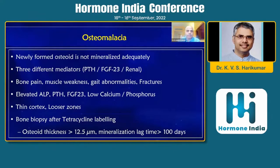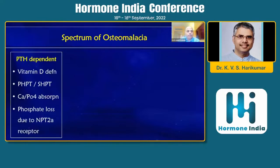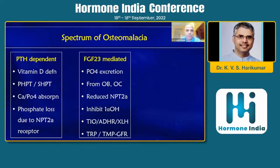Depending on availability, X-rays will show thin cortex and Looser zones. The definitive diagnosis may come after tetracycline labeling, depending on the osteoid thickness and mineralization lag time. In the PTH-dependent spectrum, vitamin D deficiency can lead to either primary or secondary hyperparathyroidism, affecting calcium and phosphorus absorption. This hyperparathyroidism leads to internalization of NaPi2 receptors and then phosphate loss. So both deficiency of calcium as well as phosphate loss will lead to osteomalacia.